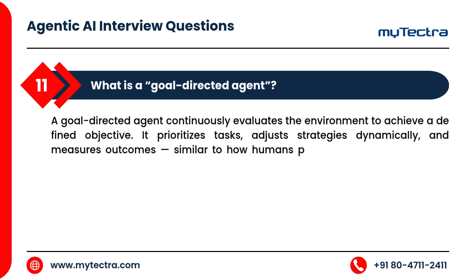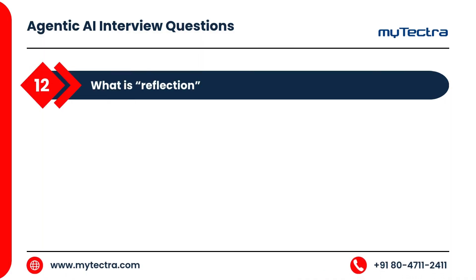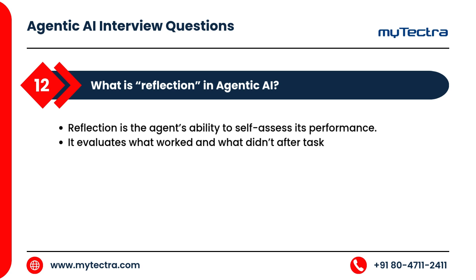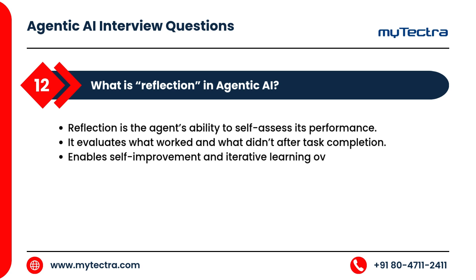What is reflection in agentic AI? Reflection is the agent's ability to self-assess its performance. It evaluates what worked and what didn't after task completion, enabling self-improvement and iterative learning over time.